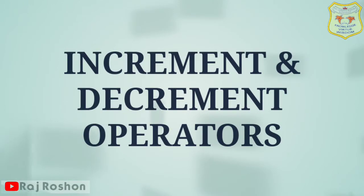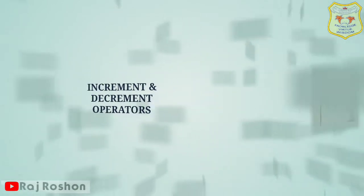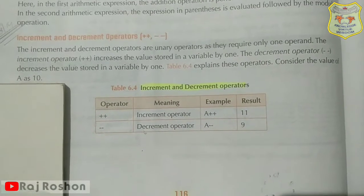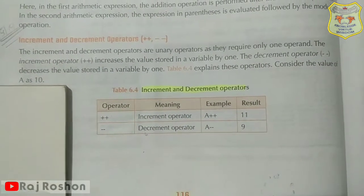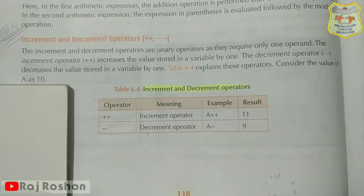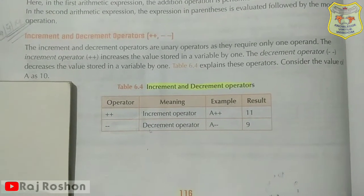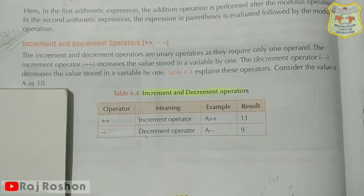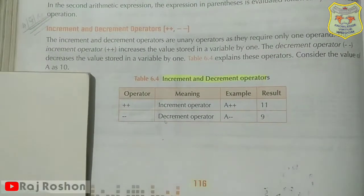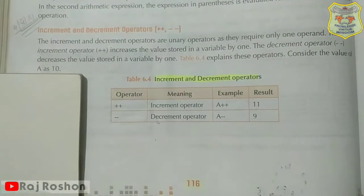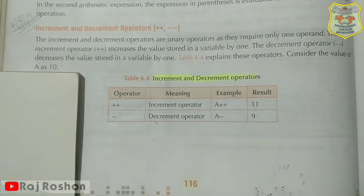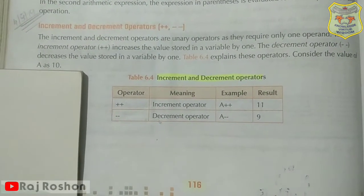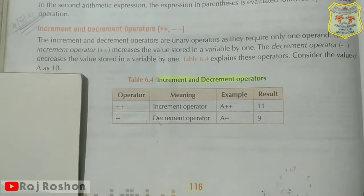The next topic is increment and decrement operators — plus plus and minus minus. Plus plus indicates increment and minus minus indicates decrement. The increment and decrement operators are unary operators as they require only one operand. The increment operator plus plus increases the value stored in a variable by one, and the decrement operator decreases the value by one.